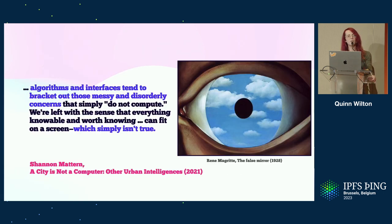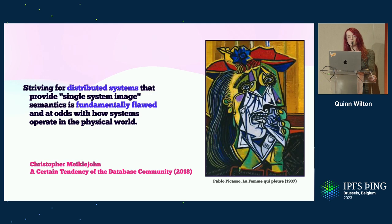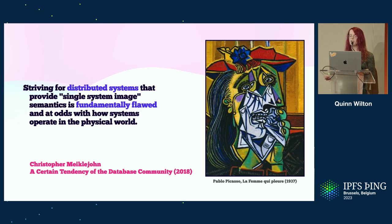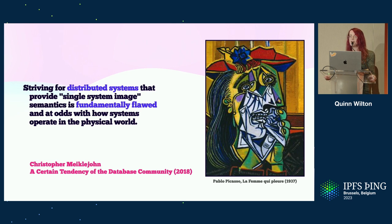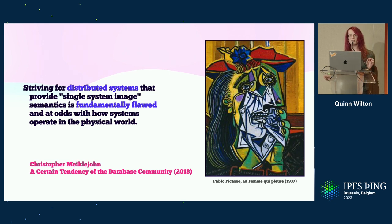In one of my favorite books of 2021, Shannon Mattern said that algorithms and interfaces tend to bracket out those messy and disorderly concerns that simply do not compute. Christopher Mickeljohn makes a similar point, especially as it relates to distributed systems. In 2018 he wrote that striving for distributed systems that provide single-system image semantics is fundamentally flawed and at odds with how systems operate in the physical world. Real-world systems are fundamentally eventually consistent — they perpetuate themselves through the exchange of information in the form of letters, telephone calls, and writing, and so they must be resilient to that information being dropped, delayed, or reordered.